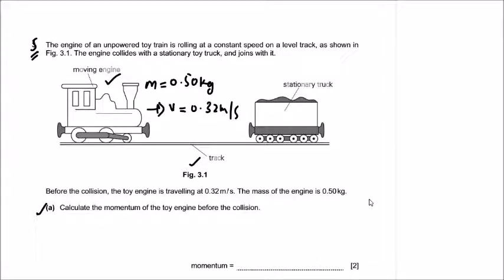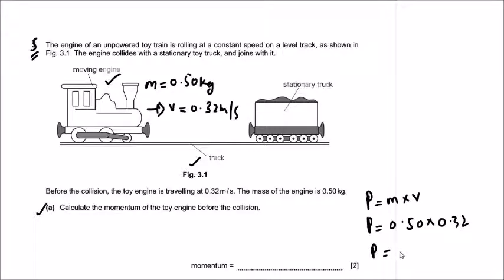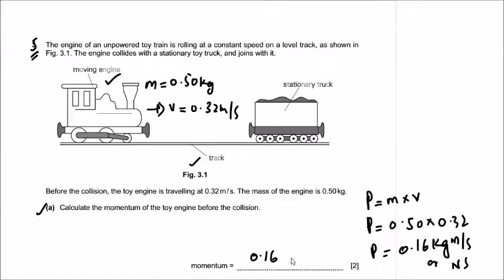Momentum is the product of mass and velocity. Before the collision, the mass is 0.50 kilograms and the speed is 0.32 meters per second. Multiplying these gives 0.16 kilogram-meters per second, or 0.16 Newton-seconds. That is the momentum of the toy engine.